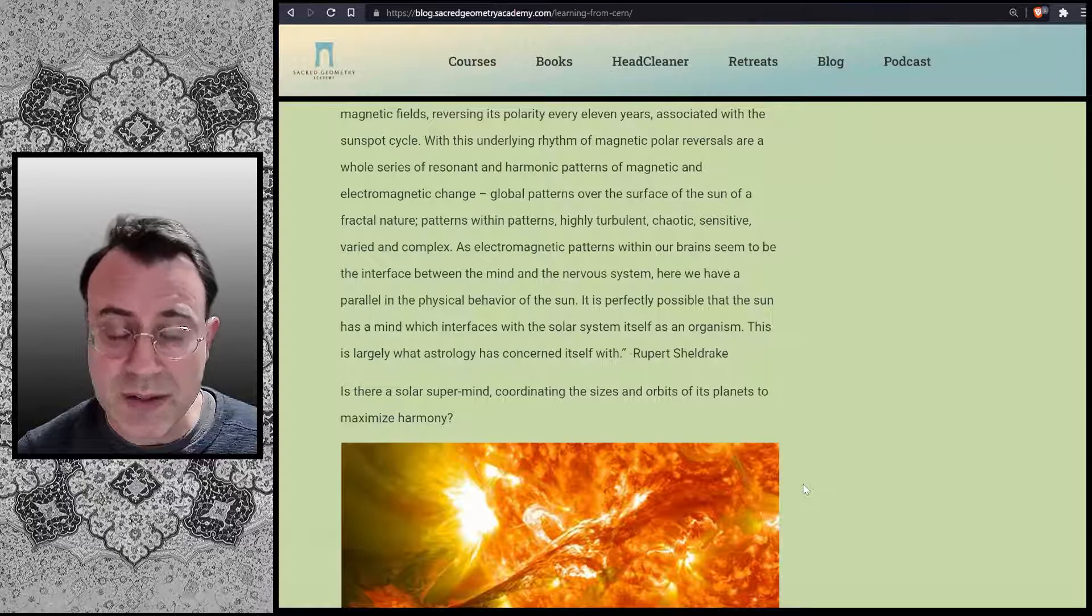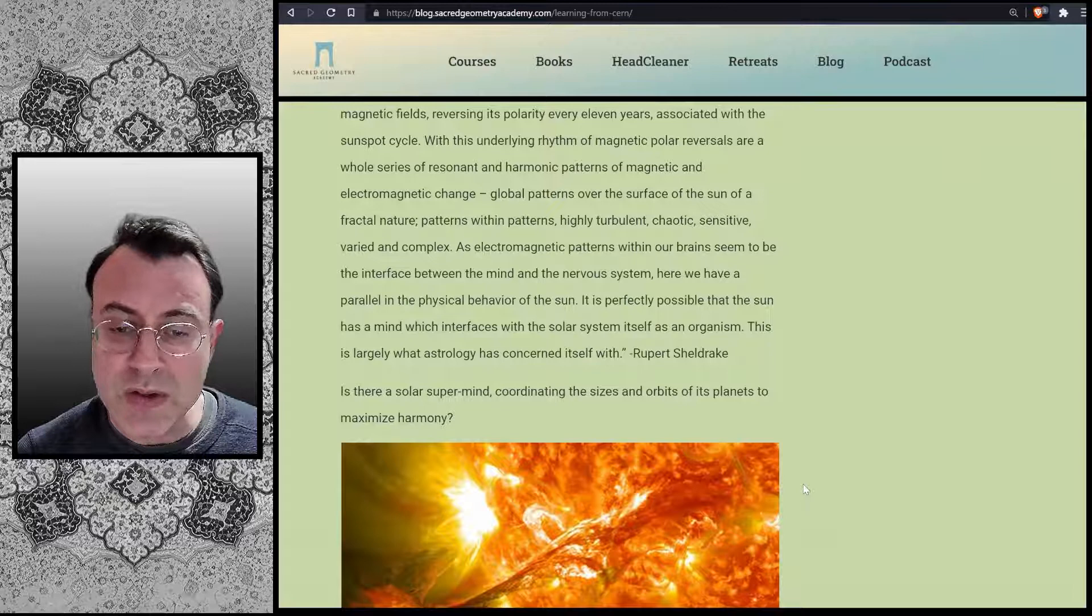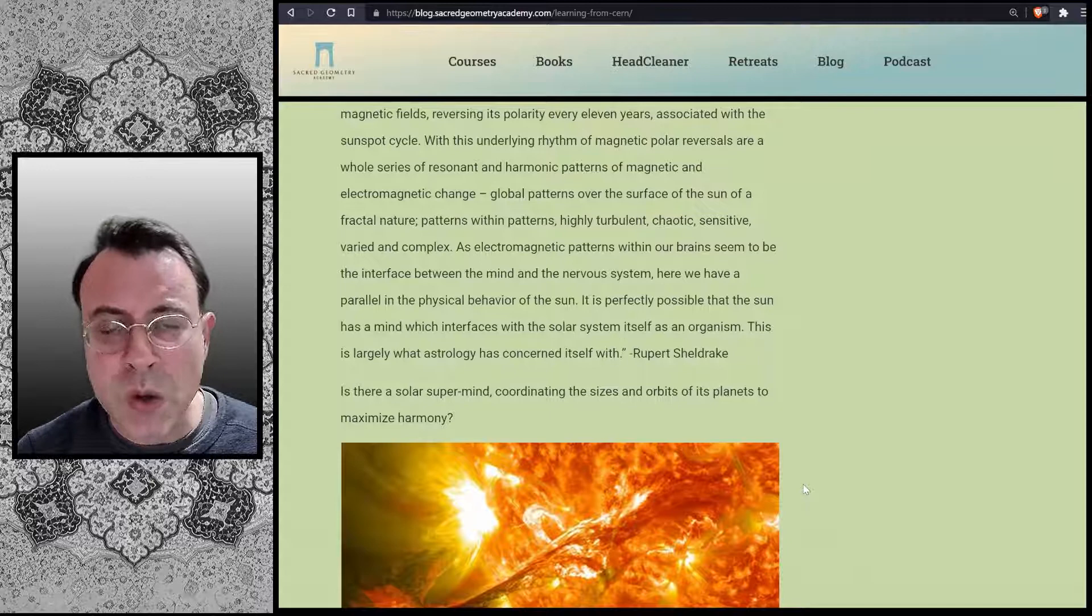As electromagnetic patterns within our brain seem to be the interface between the mind and the nervous system, here we have a parallel in the physical behavior of the sun. It is perfectly possible that the sun has a mind which interfaces with the solar system itself as an organism. This is largely what astrology has concerned itself with. End quote. Rupert Sheldrake.